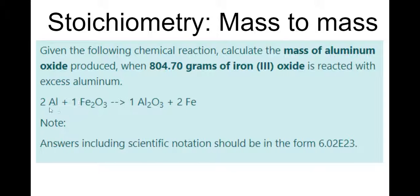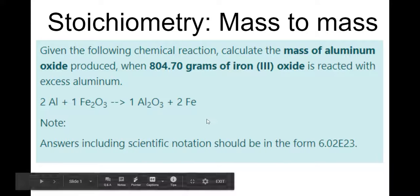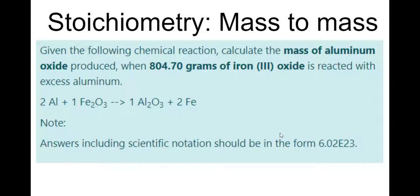And also take note of this reaction because it's going to come back, and this is why we practice naming, this is why we practice balancing, so you know how to do this. Where two aluminum plus one mole of Fe2O3, iron III oxide, reacts to form one mole of Al2O3 and two iron. This note is always on there, but good to know.